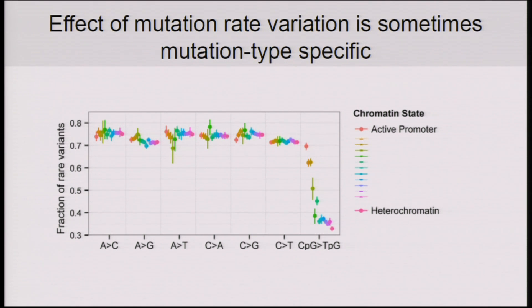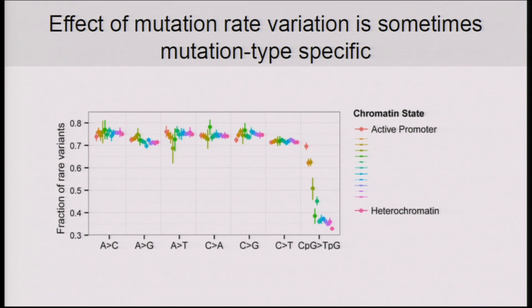Another example of within-mutation-type variation is in association with chromatin states. We're stratifying mutations by their type and also by the chromatin state in which they lie. What I'd like you to see is how much variation exists within CpGs just as a function of the chromatin state in which the variant lies, whereas for all other mutation types there's really very modest association with chromatin states. The take-home from these analyses is that we can observe the effect of variation within mutation types.